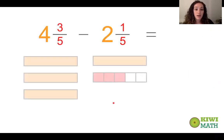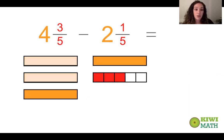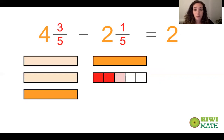Let's say we have four and three fifths — four wholes and three fifths shaded in — and we want to take away two and one fifth. This is pretty straightforward. If we take away two wholes, we're left with two wholes. If we take away one fifth, we're left with two fifths. So our answer would be two and two fifths.